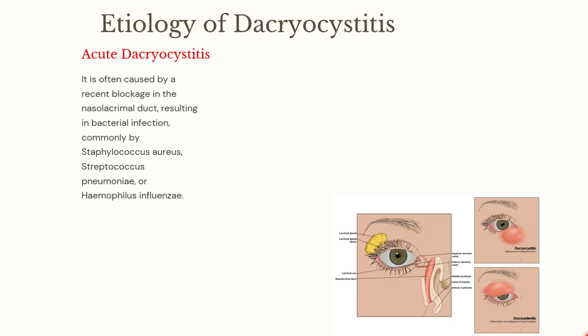Acute Dacryocystitis refers to a recent onset of symptoms, present less than 3 months, while chronic Dacryocystitis has been present for a long time and requires surgical intervention. Acute Dacryocystitis is typically caused by a blockage in the nasolacrimal duct leading to infection by bacteria such as Staphylococcus aureus, Streptococcus pneumoniae, or Haemophilus influenzae.